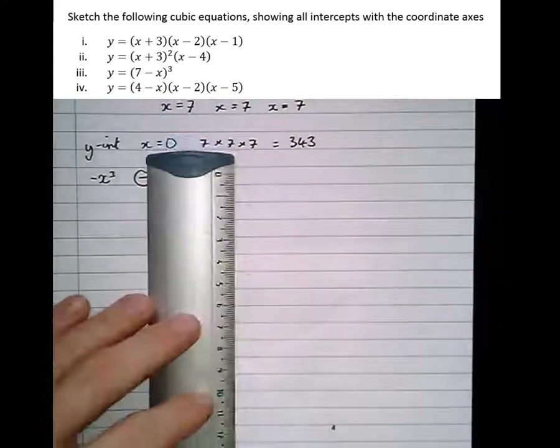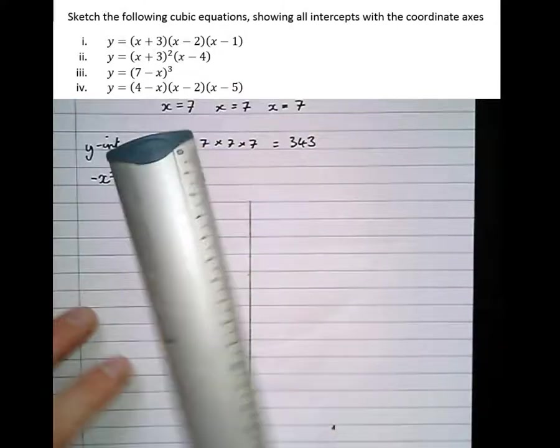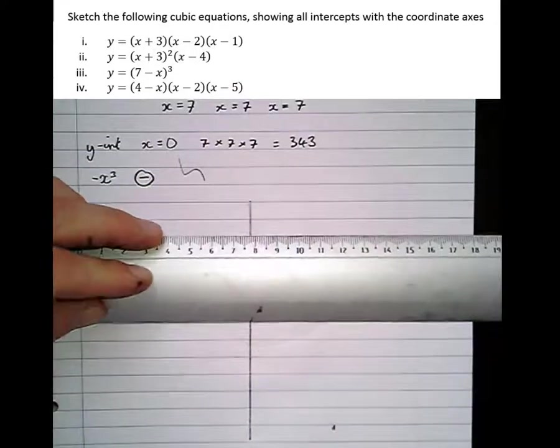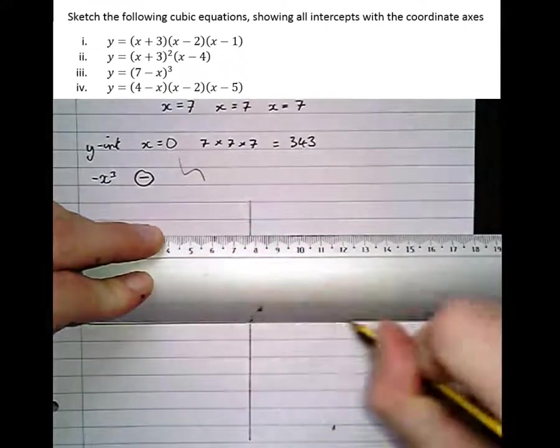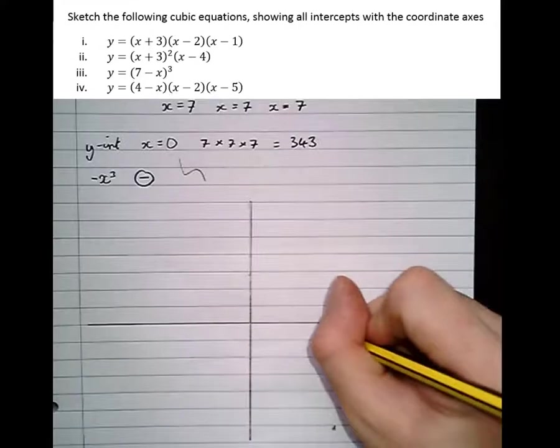So now drawing the roots, sorry, drawing the axes, and putting on the roots. Nice and big pencil so we can rub it out later if need be. So we've got three roots at X equals 7.